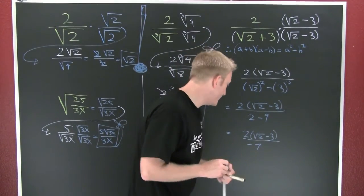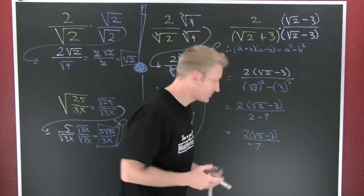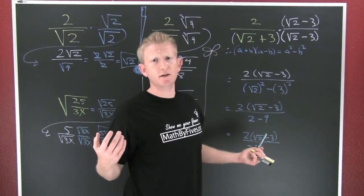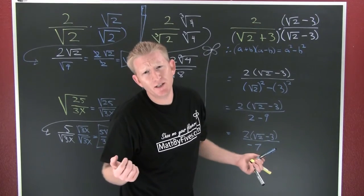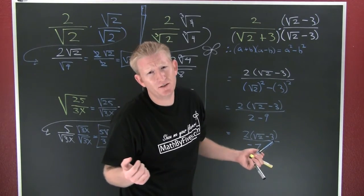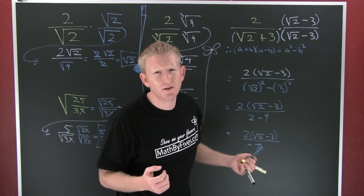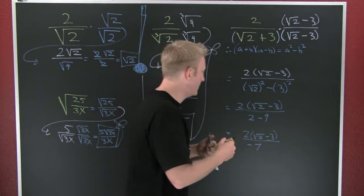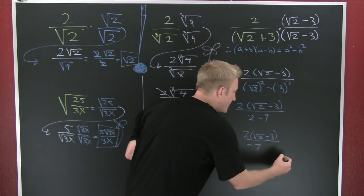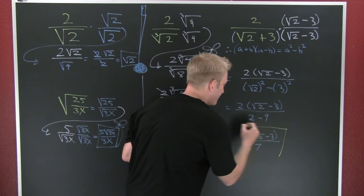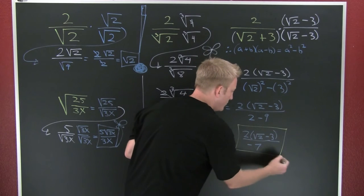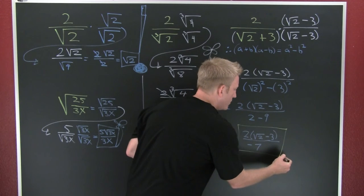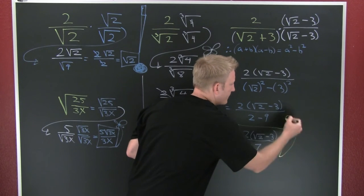And at that point the final answer is 2 times the square root of 2 minus 3, all over negative 7.